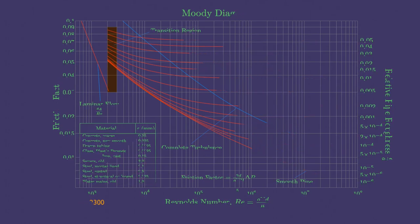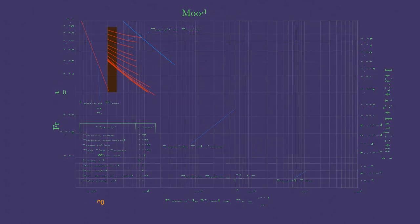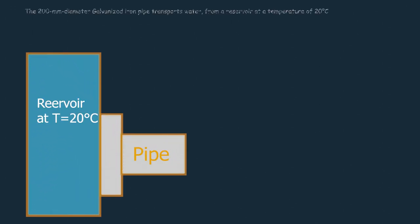Now, let us do some serious calculations. The 200 mm diameter galvanized iron pipe transports water from a reservoir at a temperature of 20 degrees Celsius.